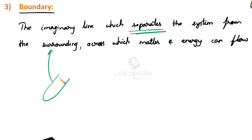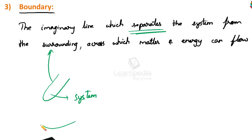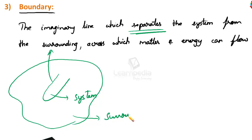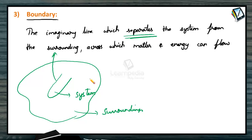Because we are doing an experiment in this particular test tube, this entire test tube becomes the system. The entire remaining part of the universe becomes the surroundings. And the glass wall of the test tube, which separates the system from the surroundings, is called the boundary. So a system and the surroundings are separated by a boundary.